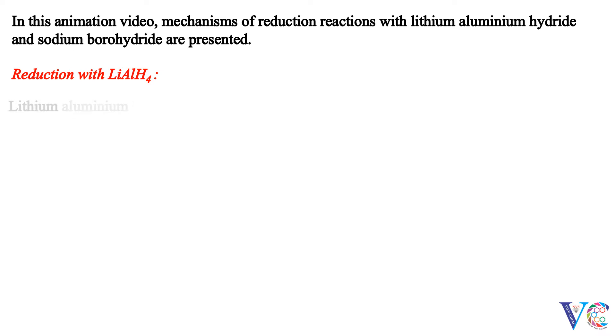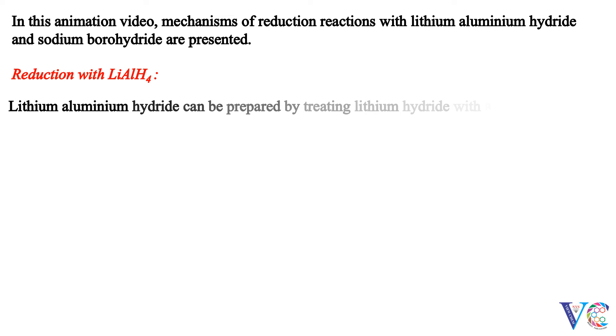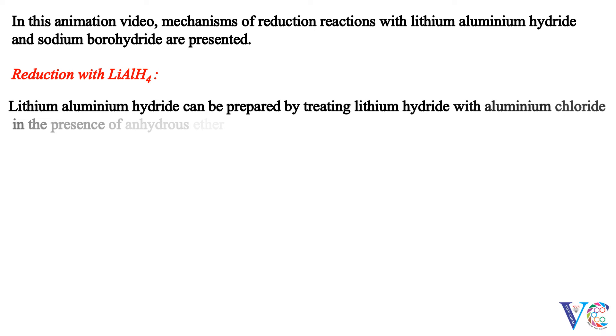Lithium-aluminium hydride can be prepared by treating lithium hydride with aluminium chloride in the presence of anhydrous ether.